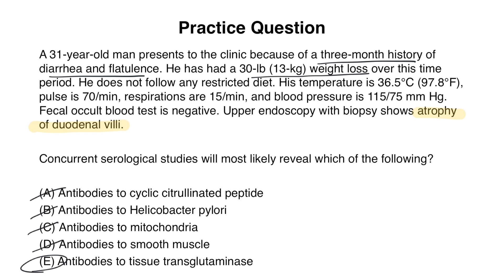To summarize, celiac disease presents with weight loss, diarrhea, and flattening of the villi on biopsy. Look out for antibodies including anti-tissue transglutaminase (anti-TTG), anti-endomysial antibodies, and anti-gliadin antibodies — all are fair game for test questions. We hope you found this video helpful. If you did, please like and subscribe, and as always, good luck studying!